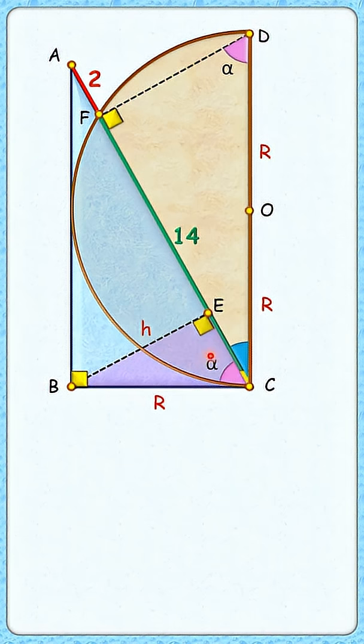Now in this pink right angle triangle and this green right angle triangle we have got angles 90 and alpha in them so by angle angle similarity these triangles are similar to each other here.